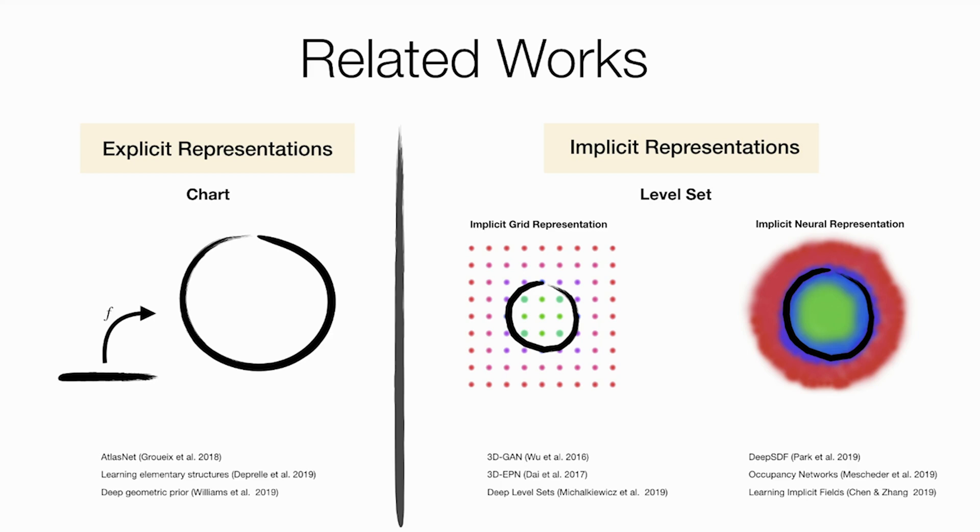More traditionally, researchers have modeled the implicit function only over a fixed predefined grid. Then, the shape that is the zero-level set is extracted by some sort of interpolation between grid points. Note that this is a natural generalization of 2D image modeling, thus enabling us to use successful convolutional neural networks in 3D. More recently, some works have suggested using neural networks directly to model a continuous or even smooth implicit function. Our work falls into this category.